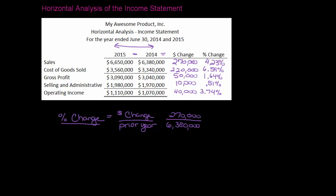Now let's take a look at this and interpret it. It's great that operating income is up — that's awesome. The thing that worries me, and you can really only see it when you do the percentage change, is that sales went up $270,000 and cost of goods sold went up $220,000. You'd expect that if sales went up, cost of goods sold would go up. But if I look at the percentages, my sales were up 4.23 percent and my cost of goods sold was up 6.59 percent. I would expect those two percentages to be really close together, because every time I make a sale I sell one unit of my product. So if sales go up 4.23 percent, I would expect cost of goods sold to go up by pretty much the same percentage. But it didn't.